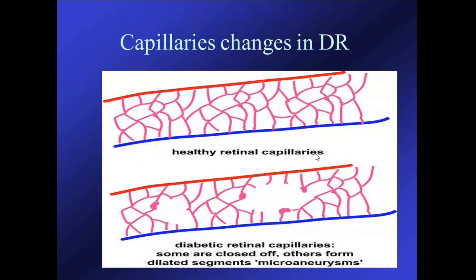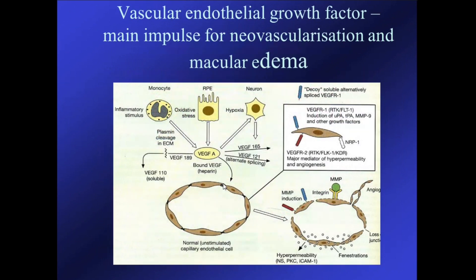What happens in the retina in diabetic retinopathy? In healthy retina, capillaries are normal. In diabetic retinopathy, some capillaries close and some dilate, forming microaneurysms. There are areas not receiving blood supply — ischemic areas. These ischemic areas produce vascular endothelial growth factor (VEGF), which is the main impulse for neovascularization and macular edema. You should remember this pathogenesis in general.